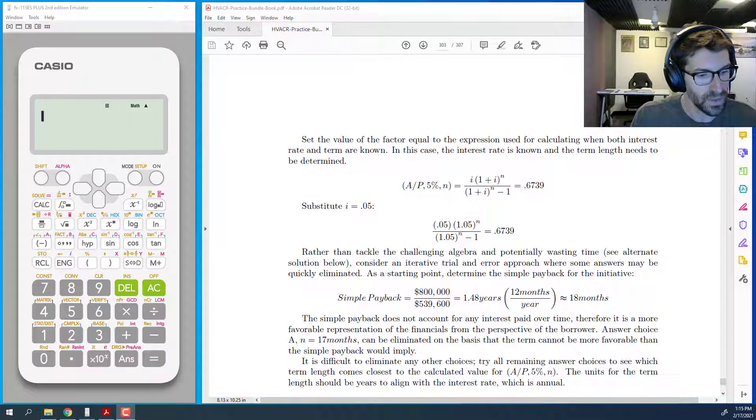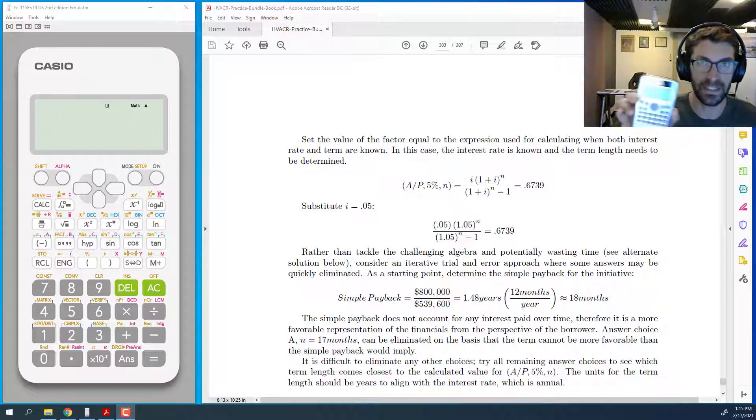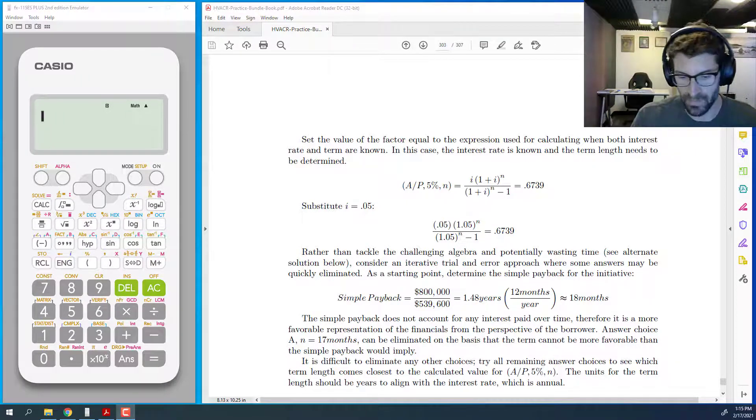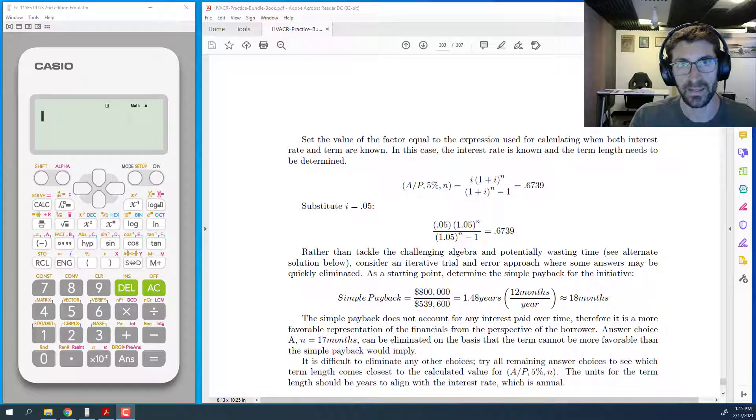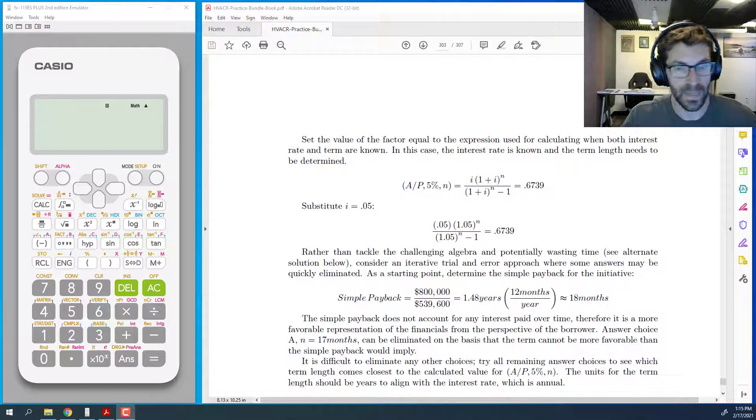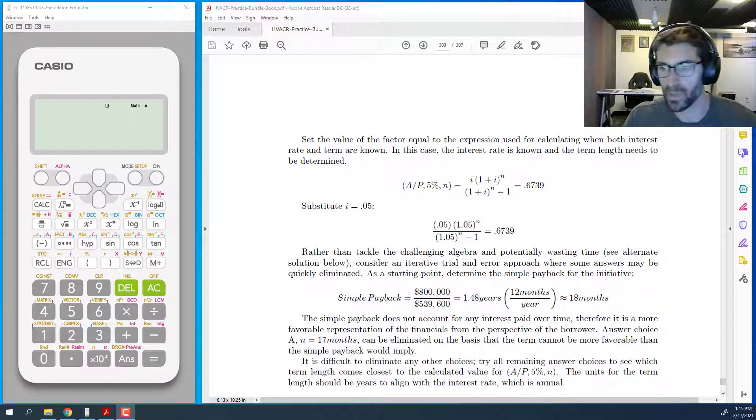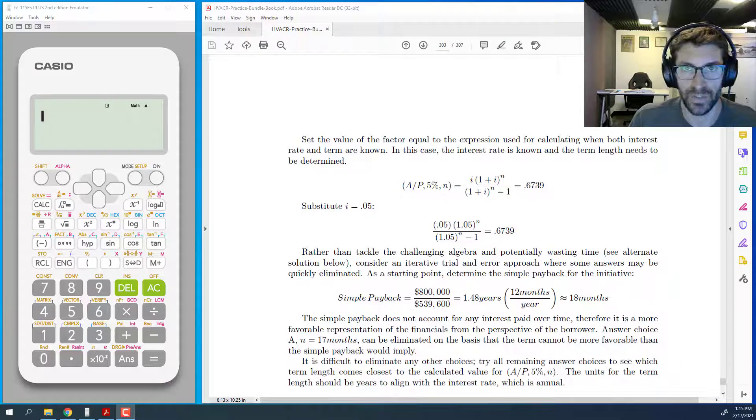And we're specifically going to go through how you do it on the Casio FX115ES+, which is one of the three models of calculators that is allowed for the PE exam. And the problem that we're going to be working on is a question that came directly out of my program, which has 144 original practice problems for the PE exam.